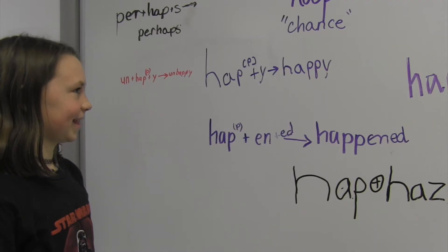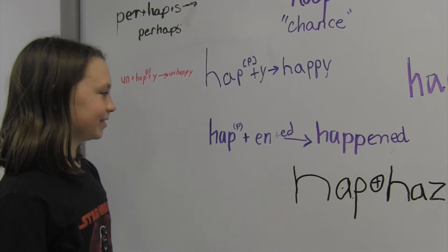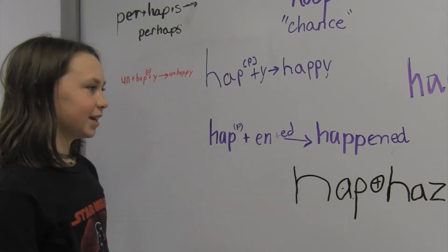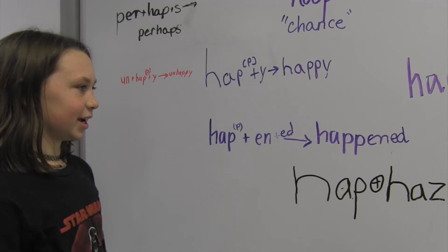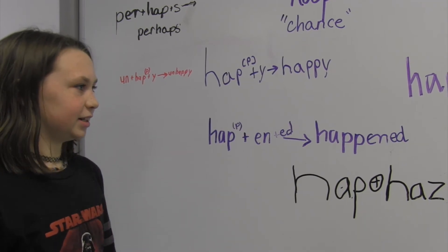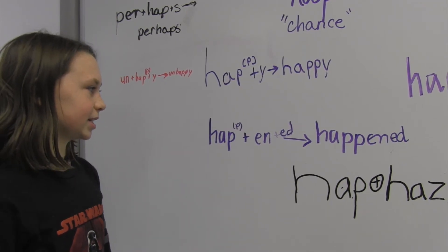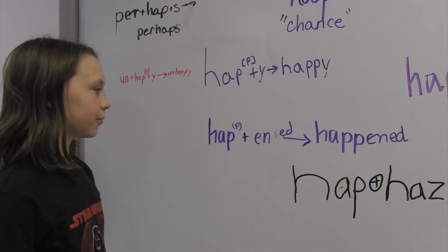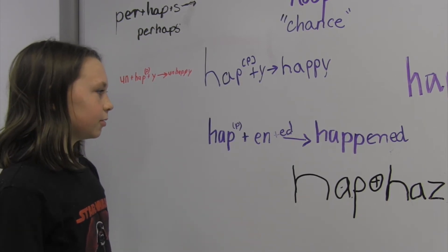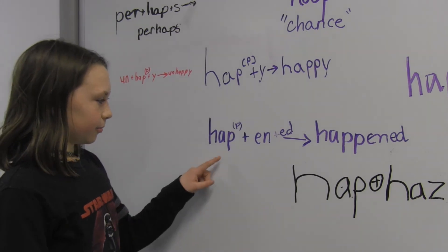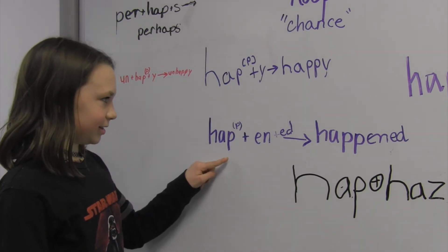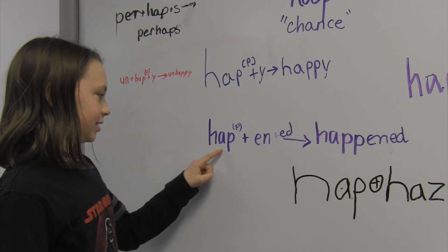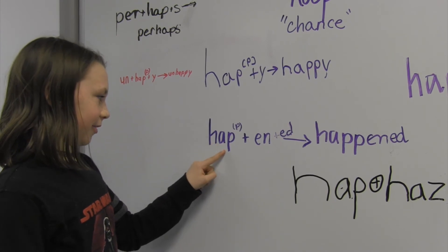What happened? H-A-P plus E-N plus E-D is rewritten as H-A double the P-E-N-E-D. We double the P because the suffix begins with a vowel and this is a one syllable base with a single final consonant and one vowel in front of it.